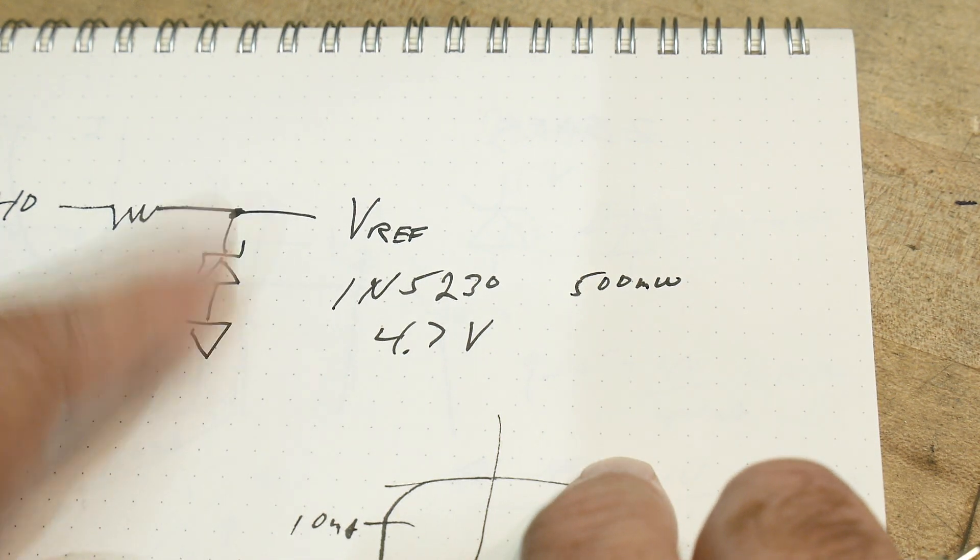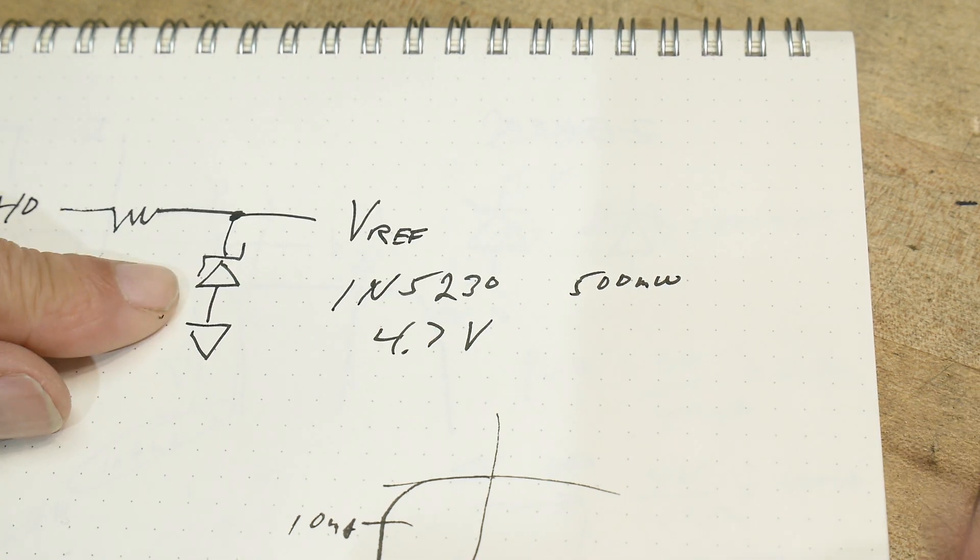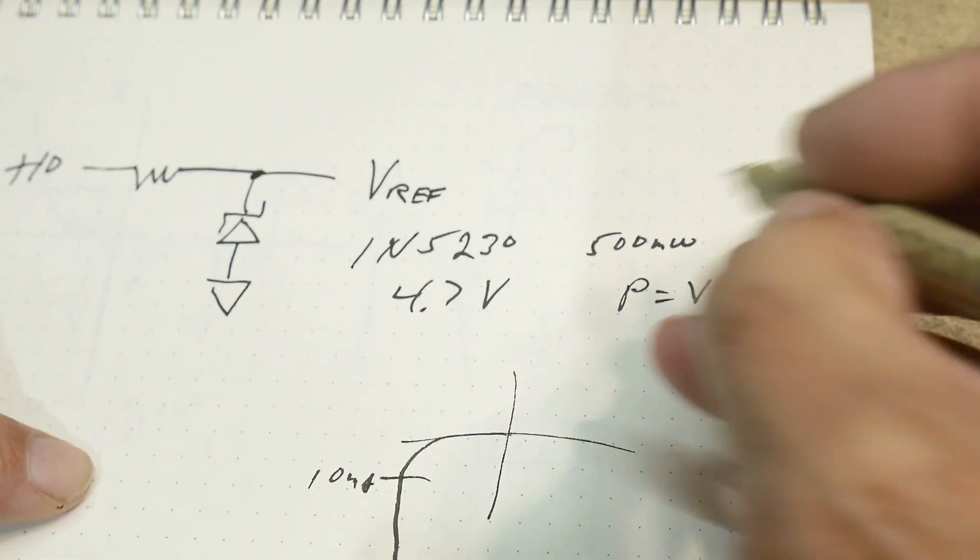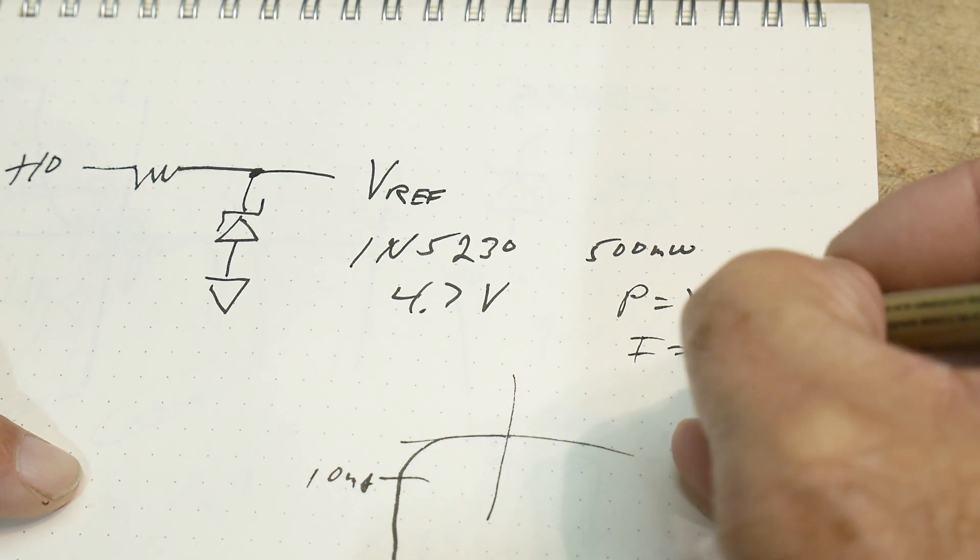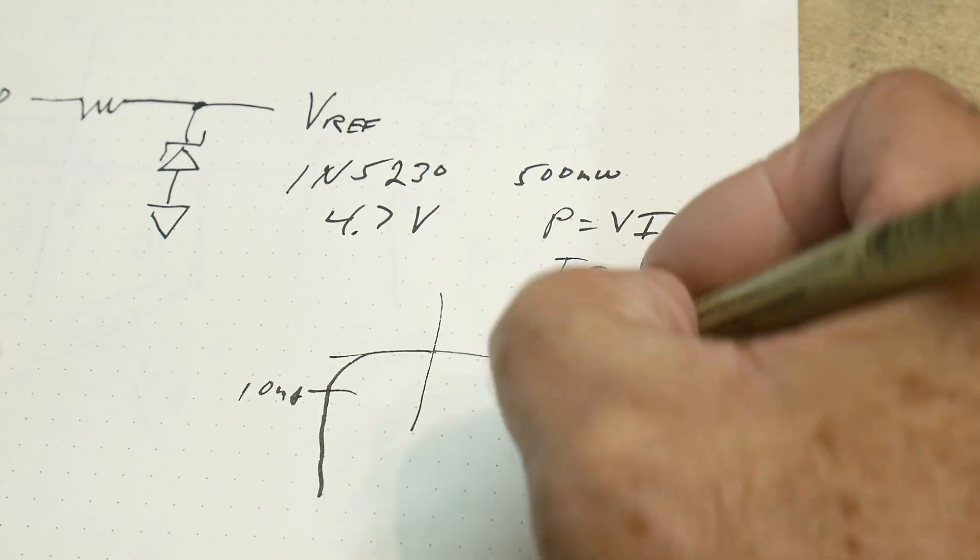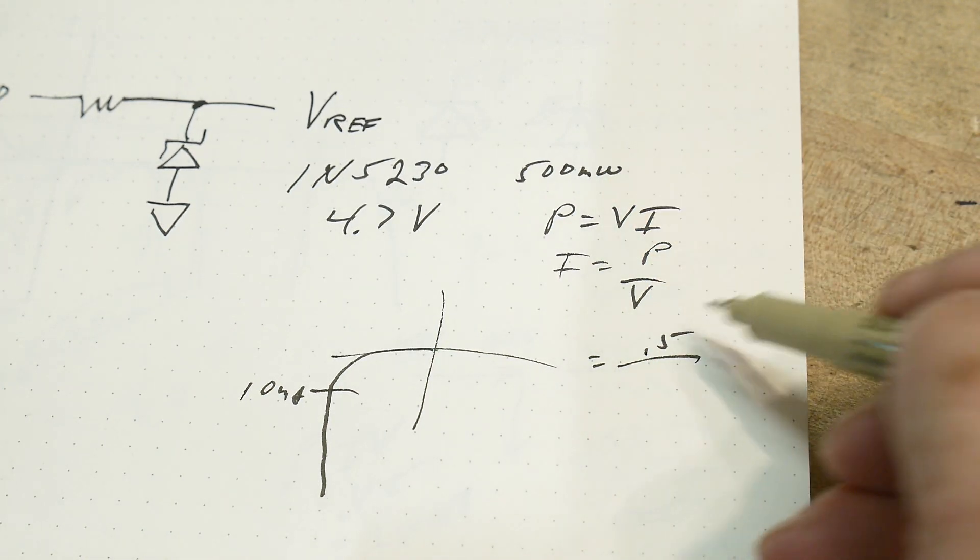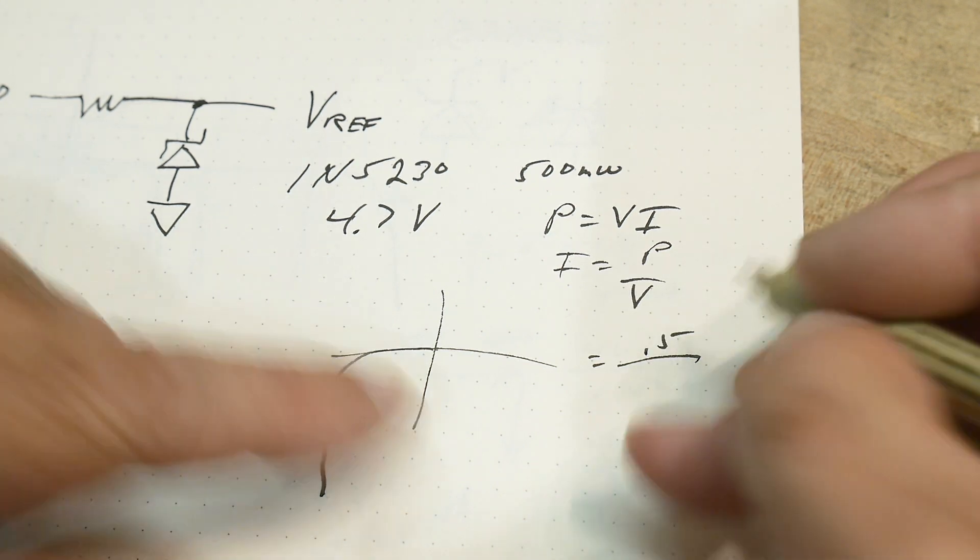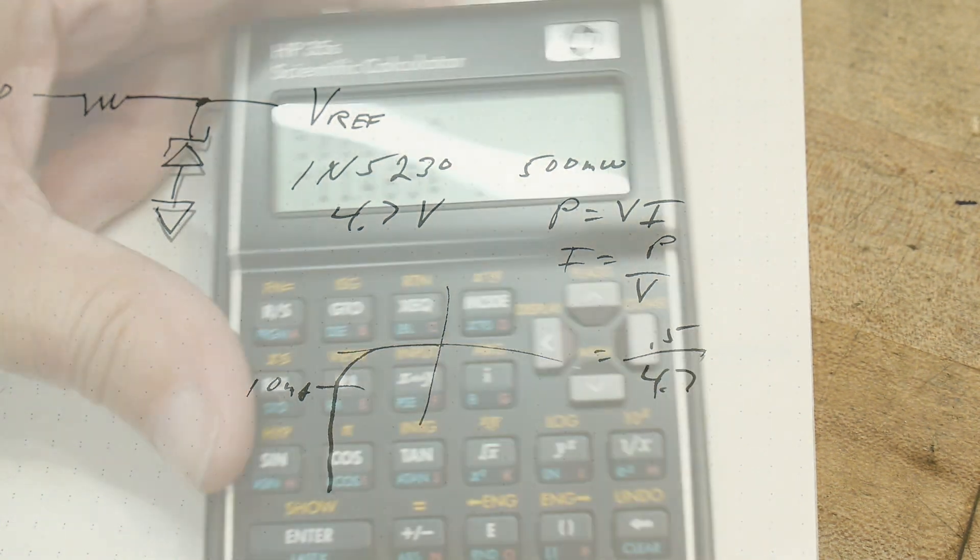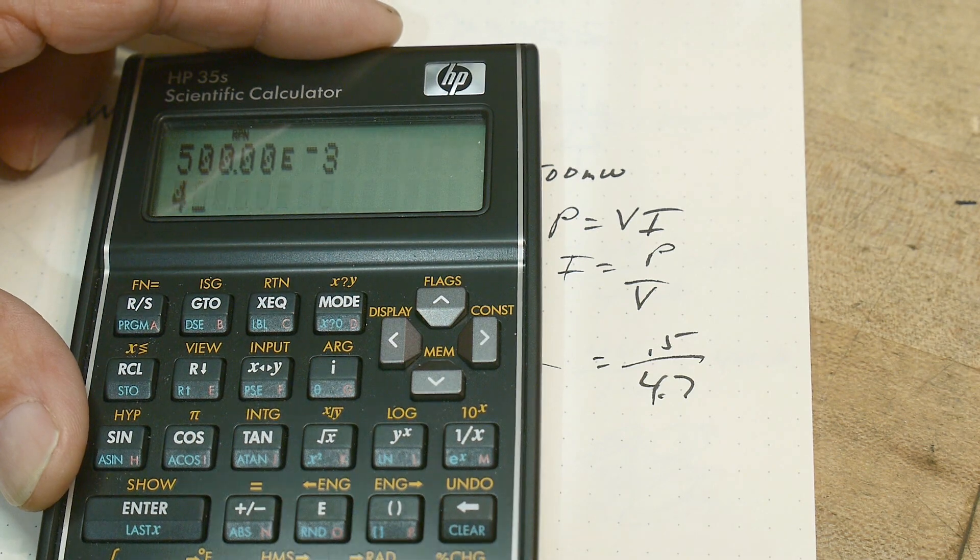So if we want to calculate how many amps it can handle, power equals voltage times current. Okay. So current equals power divided by voltage. All right. So what do we have? We have 0.5 watts and 500 milliwatts is 0.5 watts and we have 4.7 volts. So let's do that calculation.